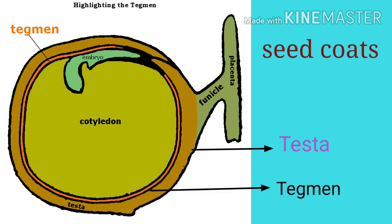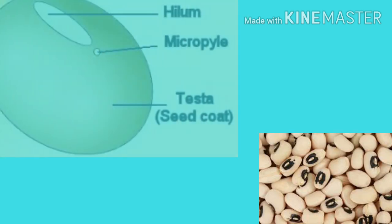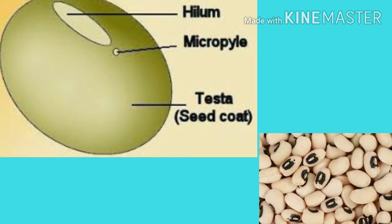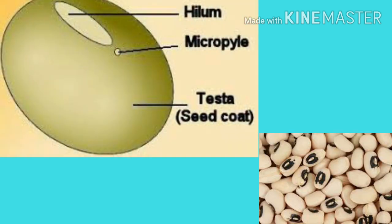The outer seed coat is called testa and the inner seed coat is called tegmen. The outer surface of the seed shows a mark of attachment with the seed stalk; this is called hilum.